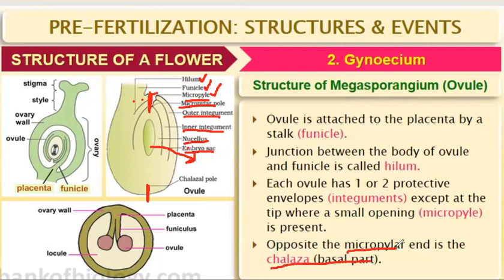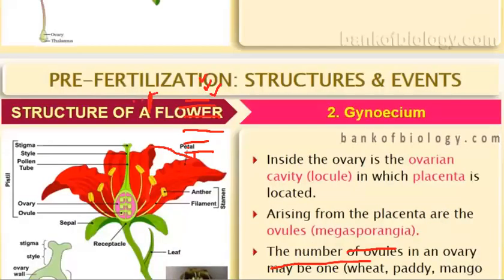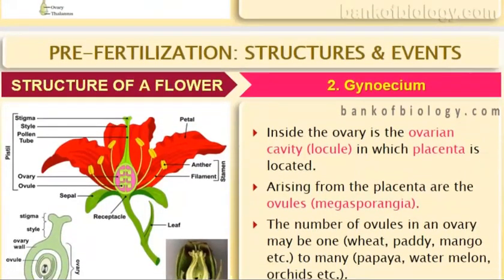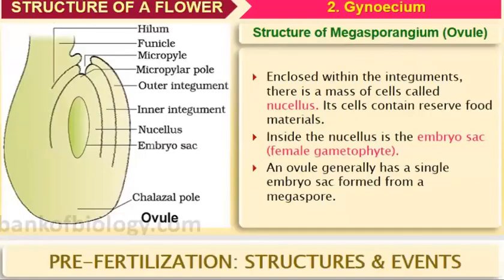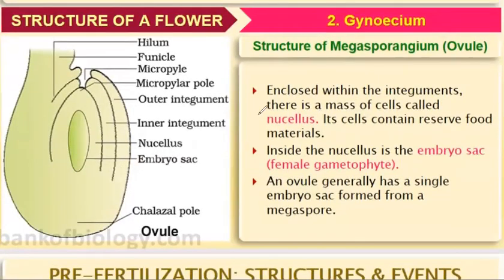The chalazal pole and the micropylar pole — we have named them based on their structure. Enclosed within the integuments is a mass of cells called nucellus. This nucellus provides reserved food to our ovule.